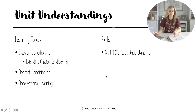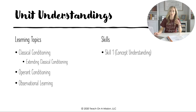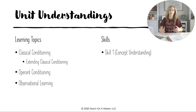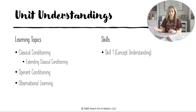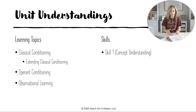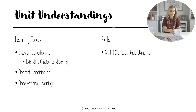According to the course and exam description laid out by College Board, all of unit four on learning is under skill one, concept understanding. That means it's going to be fair game in that first FRQ. I'm also including some graph interpretation here, which might fit better under skill two or three, but College Board does not list skill two or three in this unit.